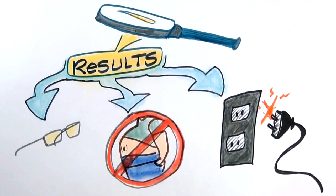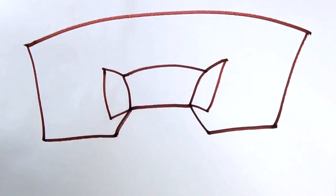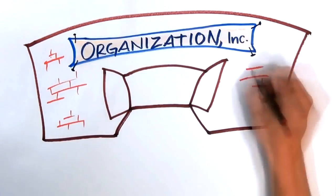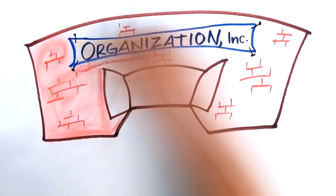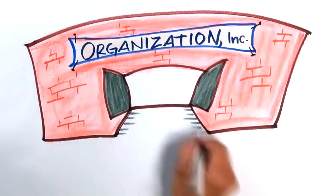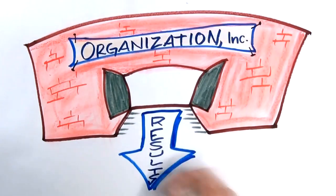So what are results? Management guru Peter Drucker defined results as the things that take place outside of the organization. Everything inside the organization is just a process to help accomplish the results that are outside the organization.